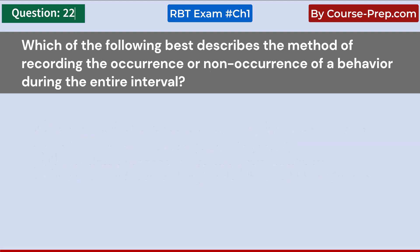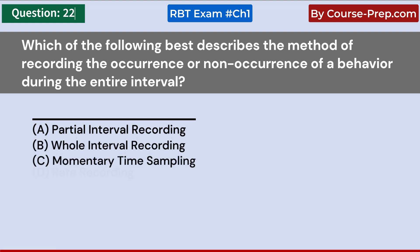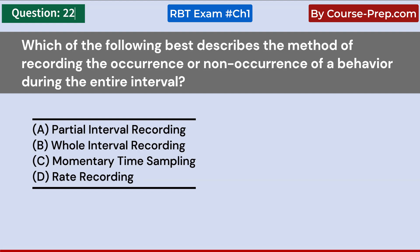Which of the following best describes the method of recording the occurrence or non-occurrence of a behavior during the entire interval? A. Partial interval recording. B. Whole interval recording. C. Momentary time sampling. D. Rate recording. Answer B: Whole interval recording.